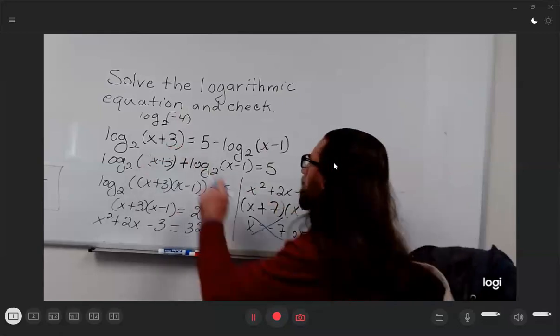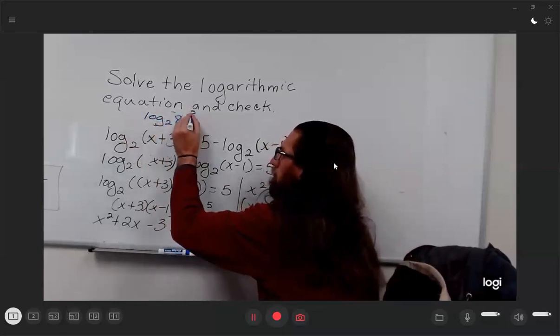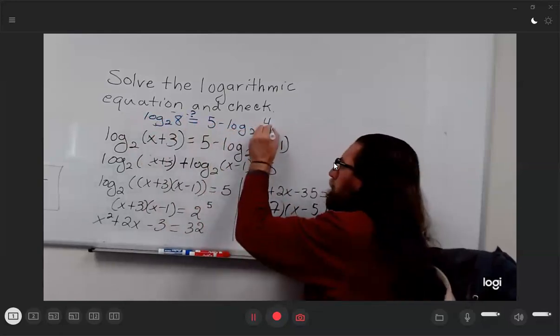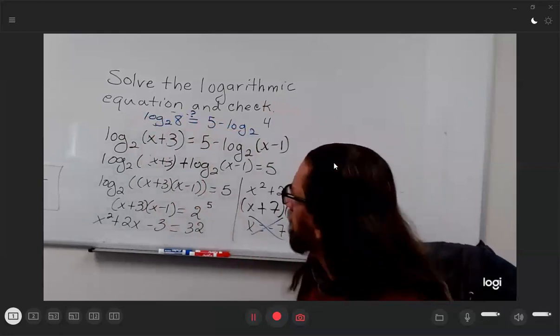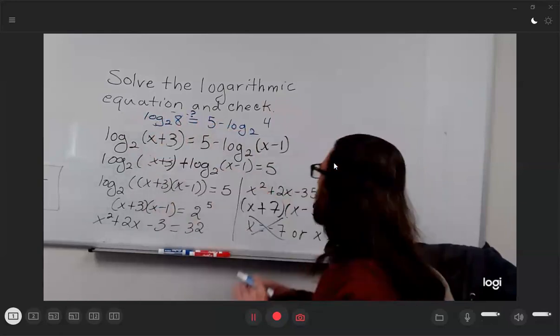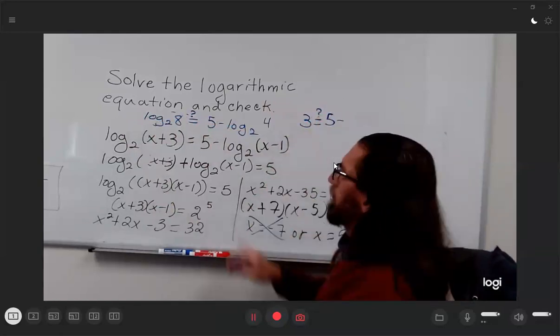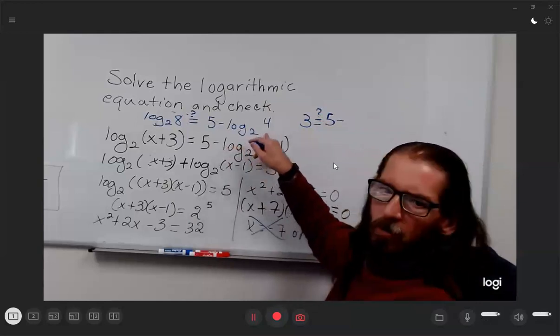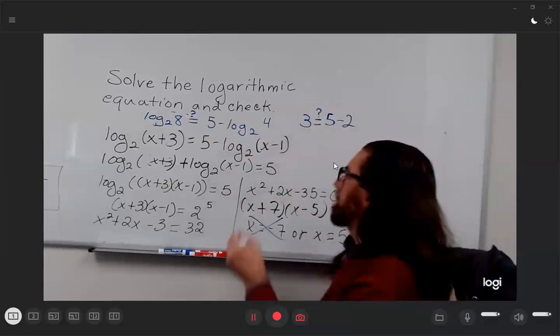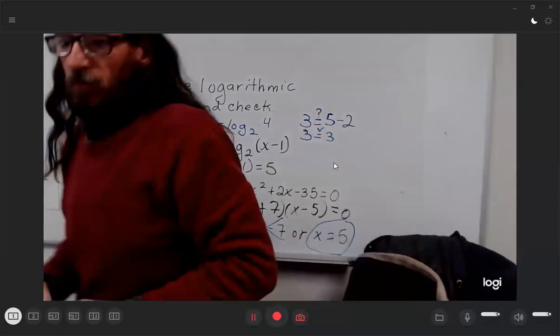And this 4. This doesn't guarantee that this is still going to work, but what exponent of 2 would give us 8? That would be 3. What exponent of 2 would give us 4? That would be 2. And we would get 3 = 3. That checks out.